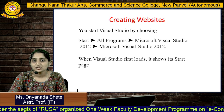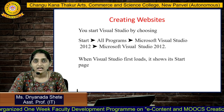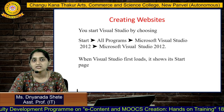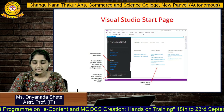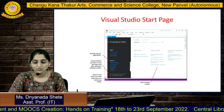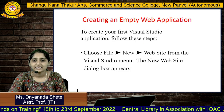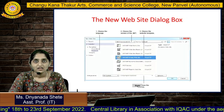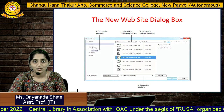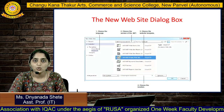First, we are creating a website. To create a website, start Visual Studio by choosing Start > All Programs > Microsoft Visual Studio 2012. When Visual Studio first loads, it shows the Start page, which has two parts: Start and Recent. Click File, then choose New Website from the Visual Studio menu. The New Website dialog box will appear.